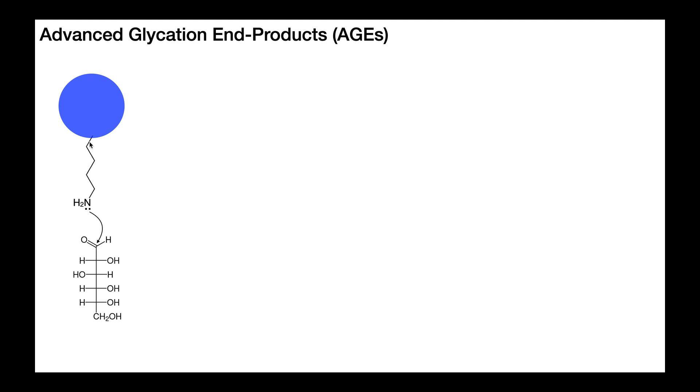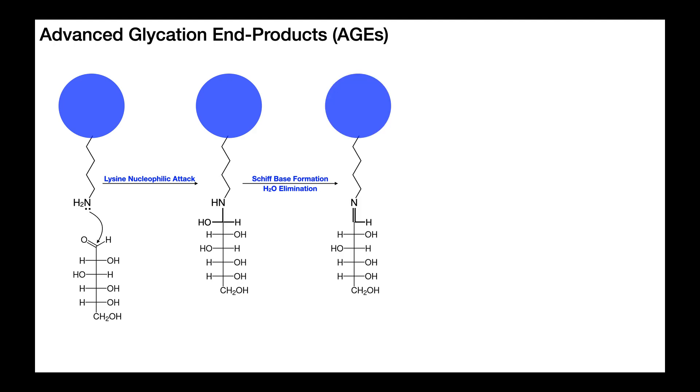So the very first step is these lysine amino acids on the hemoglobin are going to attack the glucose aldehyde right here. This aldehyde on glucose is extremely reactive, and it forms a covalent bond, as you see right here. So initially, you have a lysine nucleophilic attack. It's important to understand that this process does not require an enzyme. It's spontaneous. It occurs all by itself. And so the more glucose you have in the blood, the more likely this reaction is to occur, and the more of this that will accumulate.